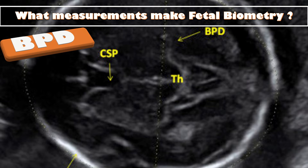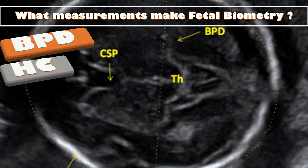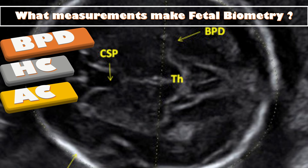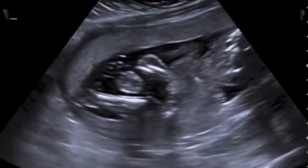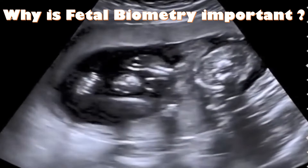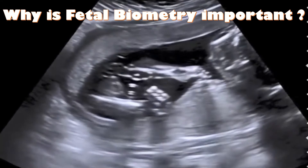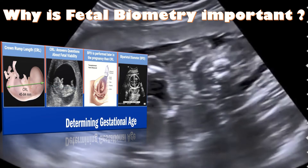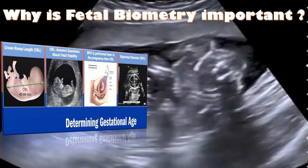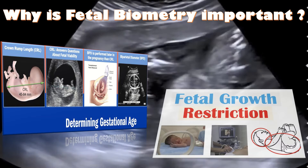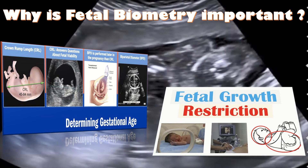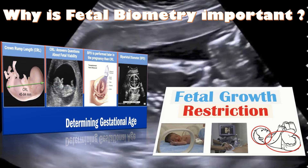The ultrasound parameters used in fetal biometry include the biparietal diameter, head circumference, abdominal circumference, femur length, and crown-rump length. Fetal biometry is important because it helps determine the exact gestational age, and fetal growth restriction is diagnosed through fetal biometry.